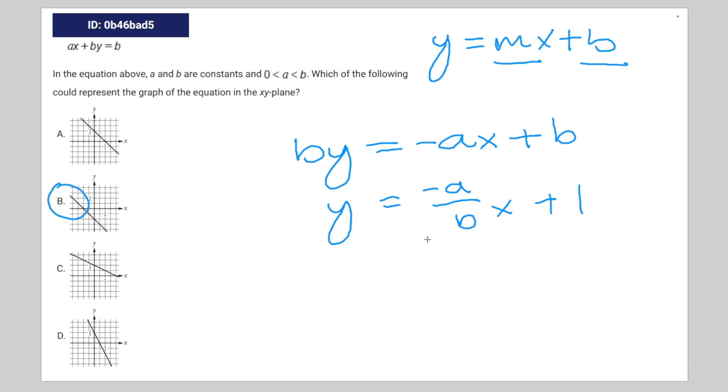And given this information that 0 is less than a which is less than b, the slope has to be between negative 1 and 0, because the denominator is greater than the numerator, and also it has to be negative.